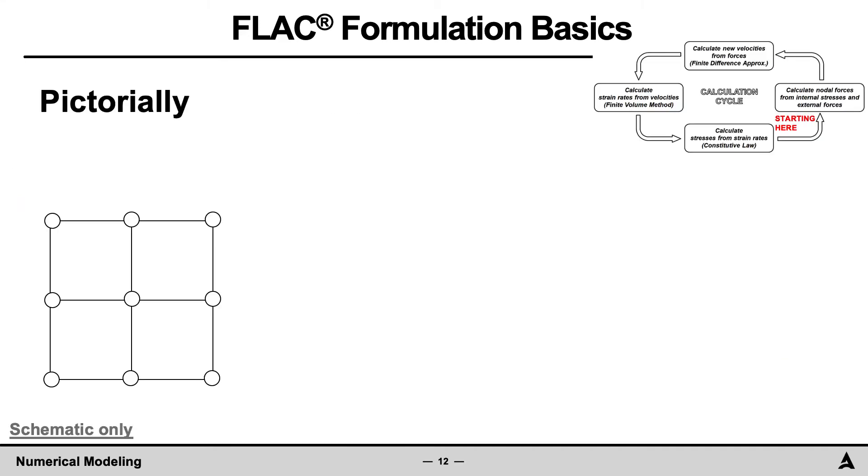This calculation cycle in FLAC will be shown next in pictorial form for a domain composed of four zones. In this example, the calculation cycle will start after the constitutive law calculation step. The domain in this example is loaded with four nodal forces in red and with internal stresses shown in green. Note that the stresses are represented by the rotated green crosses, representative of the direction and magnitude of principal stresses, with compressive normal stresses being positive.